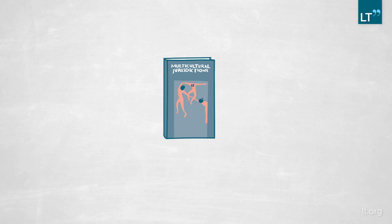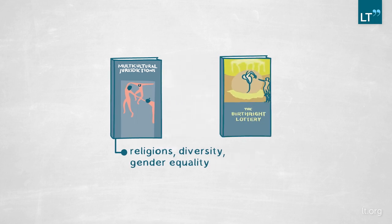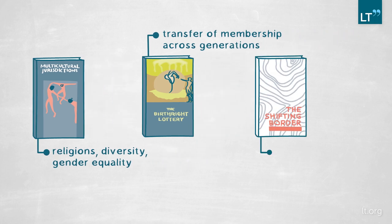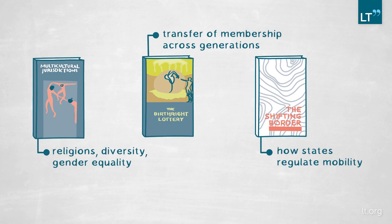Throughout my work, I've dealt with different aspects of these themes. My first book, Multicultural Jurisdictions, looked at questions of religious diversity and gender equality. My second book, The Birthright Lottery, reconceptualized how we think about the transfer of membership from one generation to another. This book, The Shifting Border, focuses on how states regulate mobility — whether within the country or prior to arrival — and how sovereignty is exercised in relationship to the border.